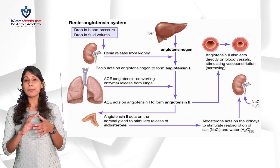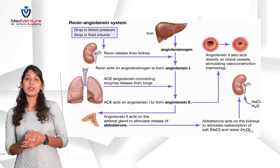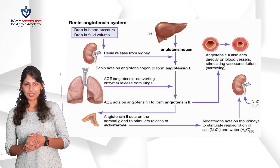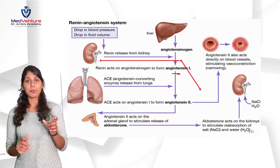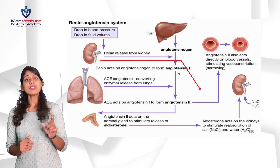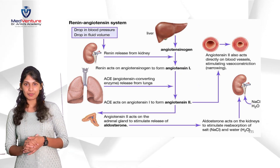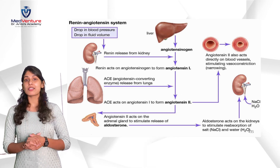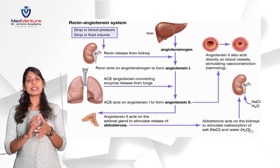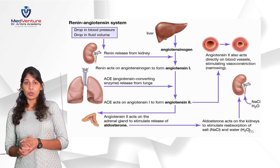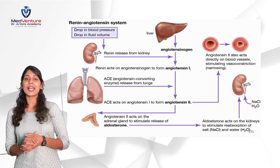When there is a hypotensive condition, beta-1 receptors of the kidney get activated and release renin. Remember, renin is the first hormone released by the kidney. Next, the liver is stimulated to produce angiotensinogen.